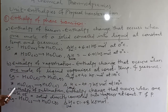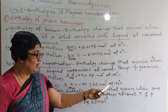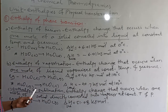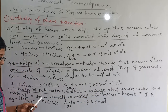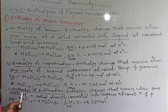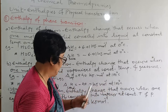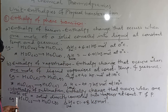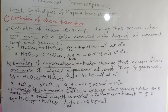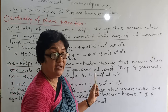The last definition in this category is enthalpy of sublimation. Enthalpy of sublimation is the enthalpy change that occurs when one mole of a solid is directly converted into vapor at constant temperature and pressure — this conversion of solid directly into vapor is called sublimation. For example, H2O solid converted into H2O gas; delta H sublimation = 51.08 kJ/mol.